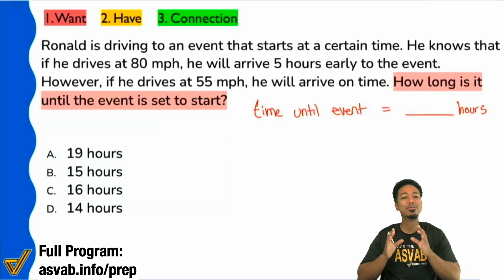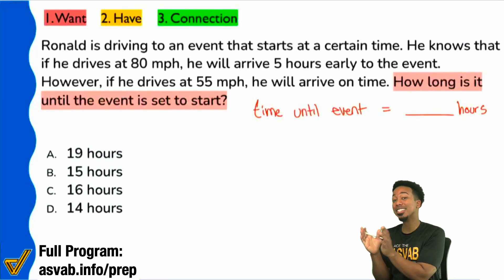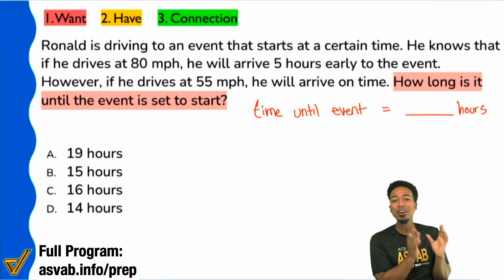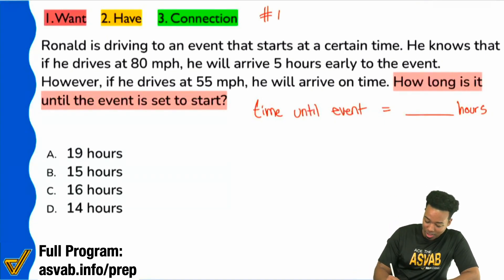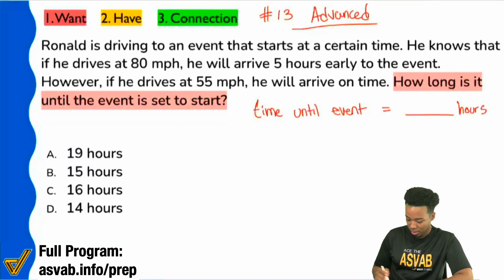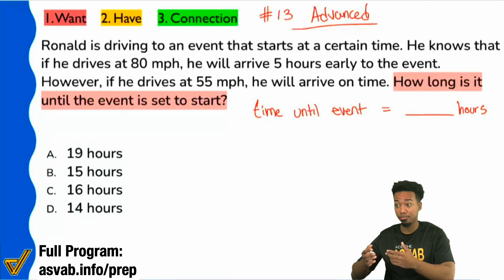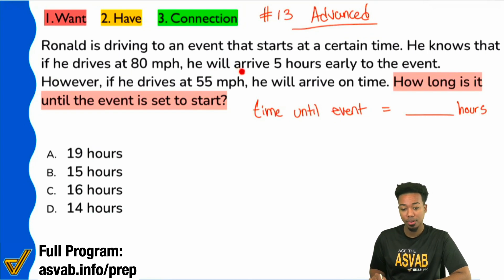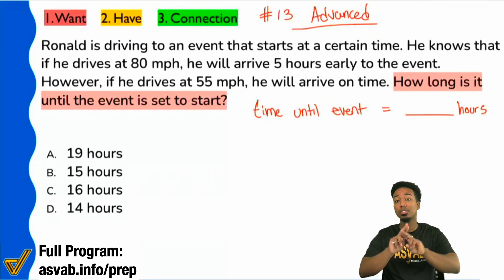Let's take it carefully here. Watch me nice and slowly because I'm going to show you how this is a distance rate time problem, but it's also a system of equations problem. So if you're in my program, this is going to be unit number 13. This is an advanced word problem. So here we go. First things first, we're going to check out some of this information here. We see that Ronald is driving to an event that starts at a certain time. He knows that if he drives at 80 miles an hour, he'll arrive five hours early to the event. So on one hand, if he picks up the speed, 80 miles an hour, he'll get there five hours early. If he drives at 55 miles an hour though, he'll get there on time. So we want to know how long is it until the event is set to start. But notice how we were given two scenarios.